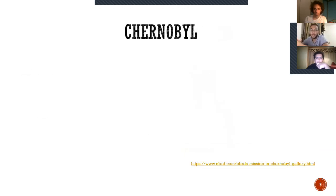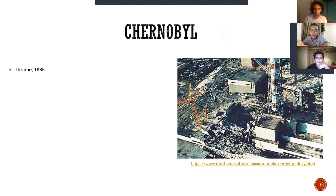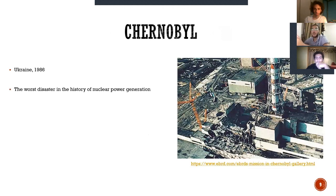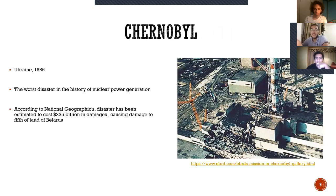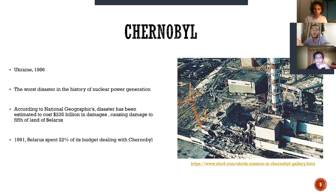Secondly, Chernobyl. Chernobyl took place in Ukraine in 1986 and has been one of the most famous and biggest nuclear disasters in the history of nuclear power. According to some studies, this incident caused the Belarusian government to spend around $258 million to cover 22% land losses as well as other sorts of losses.